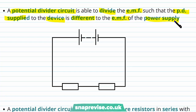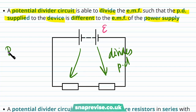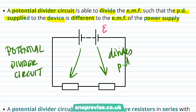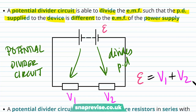A potential divider circuit is able to divide the EMF such that the potential difference applied to the device is different to the EMF of the power supply. What a potential divider circuit does is it divides the potential difference. The potential divider circuit divides the EMF across two components, so we have V1 and V2, and the EMF is equal to V1 plus V2. We know this from Kirchhoff's second law.